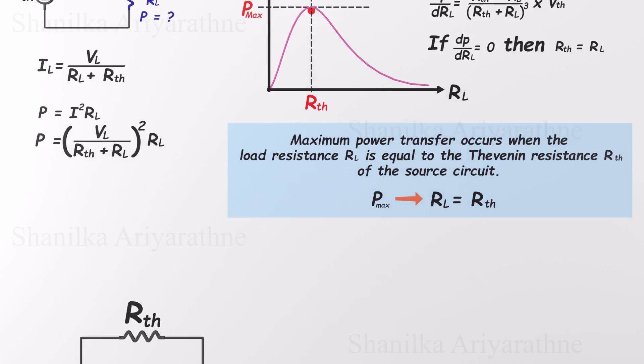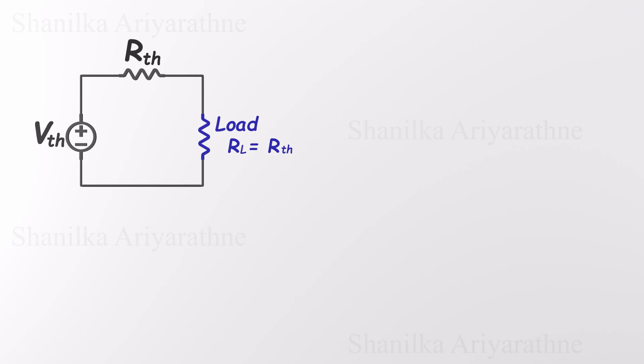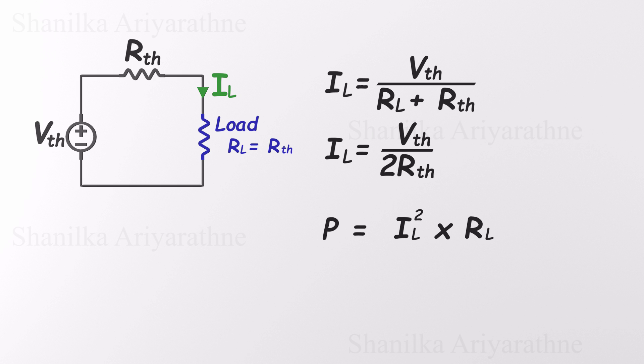Let's see what happens when the load resistance is equal to the Thevenin resistance. In this special case, we can calculate the current: load current equals VTH divided by RTH plus RL. But since RL equals RTH, this becomes VTH divided by 2 times RTH. Now let's calculate the maximum power delivered to the load using the formula P equals I squared times R. Substituting the current into the power equation, we get power equals VTH squared divided by 4 times RTH. So that's the maximum power this circuit can deliver to the load.